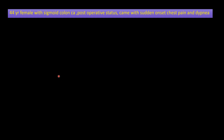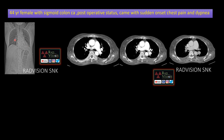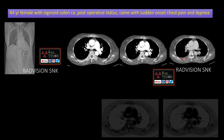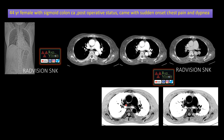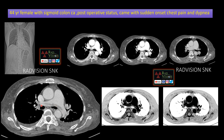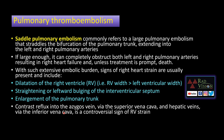Next: 44-year-old female with sigmoid colon carcinoma, post-operative status, came with sudden onset of chest pain and dyspnea. There are mild prominent bronchiovascular markings and blunting of the left costophrenic angle. There is a filling defect in the pulmonary trunk extending into the right and left main pulmonary branches, and even the segmental and subsegmental branches, with pleural effusions. When in doubt, inverting the images makes the tumor thrombus more obvious. This is a typical saddle-type pulmonary thromboembolism at the pulmonary trunk extending into right and left main pulmonary arteries. This can lead to acute right heart failure and death; extensive embolic burden leads to right heart strain depicted by dilatation of the right ventricle, leftward bulging of the interventricular septum, and enlargement of the pulmonary trunk.